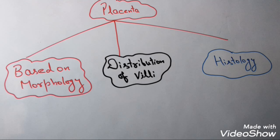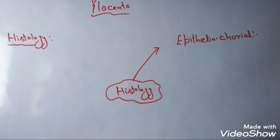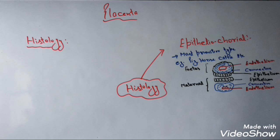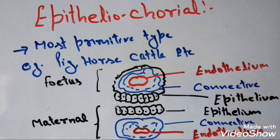Now we discuss the third classification: types of placenta based on histology. The first is epitheliochorial type of placenta. In this type, all three layers of the fetus as well as the maternal tissue remain intact. The fetus has three tissue types: endothelial, connective, and epithelial tissue. Similarly, maternal tissue has three layers: outermost epithelial, followed by connective tissue and endothelial tissue. So overall, all six layers remain intact. It is found in most primitive types — for example, pig, horse, cattle, etc.